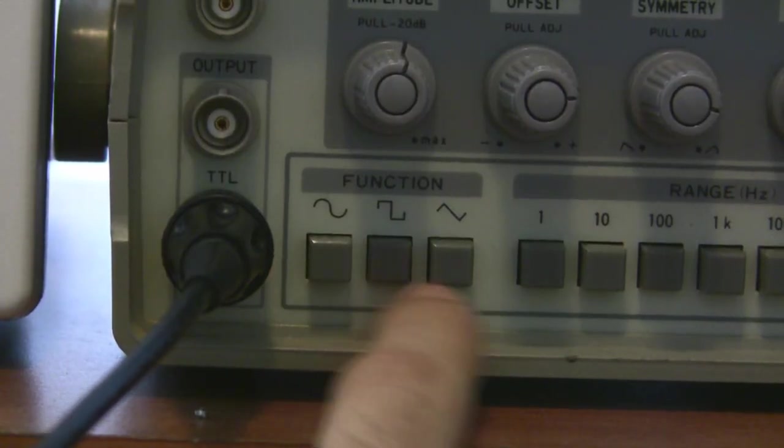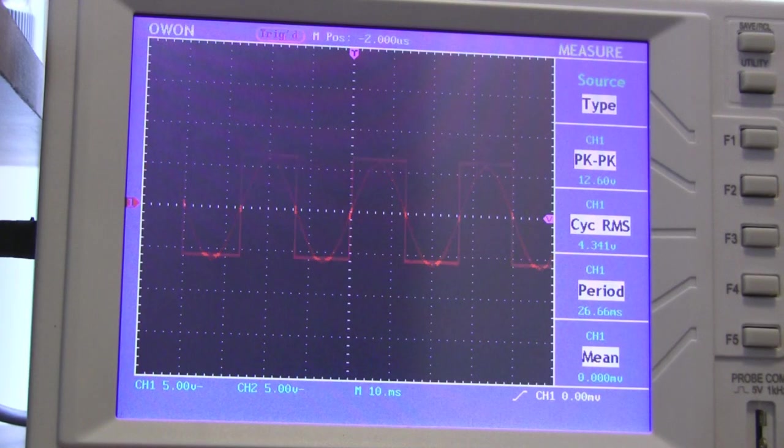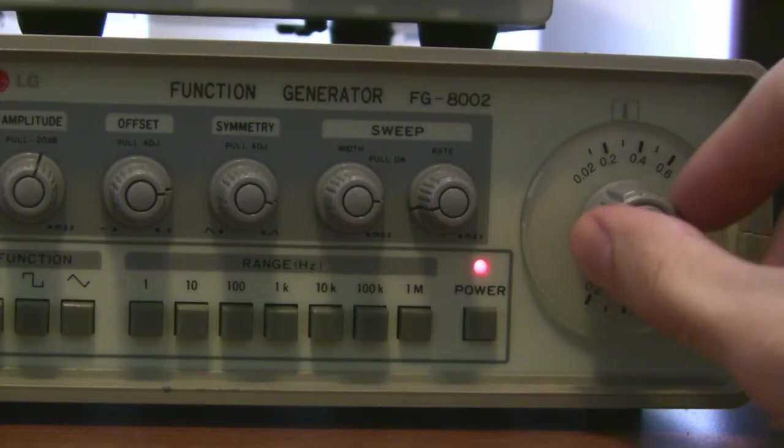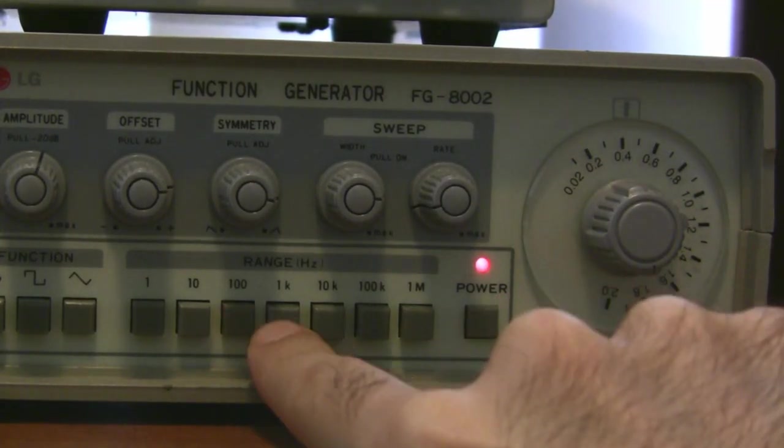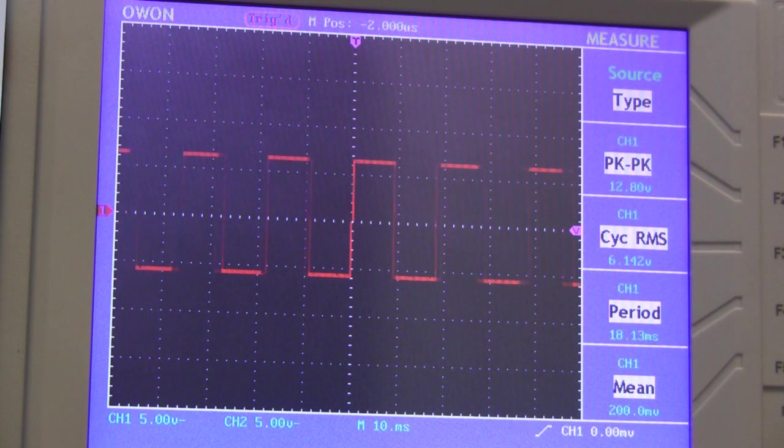Now you can switch between waveforms at the push of a button. Changing the frequency of the waveform is easy too. Just use this dial and the appropriate frequency range buttons.